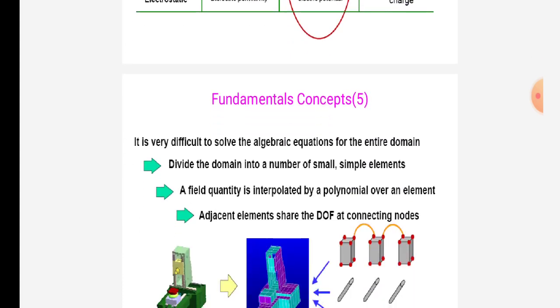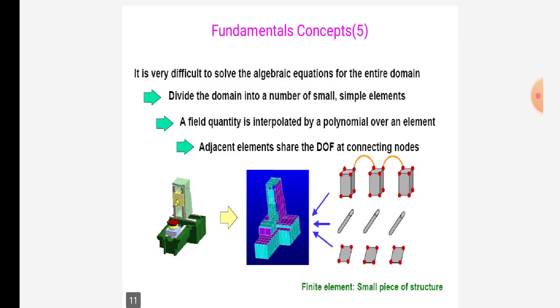It is very difficult to solve algebraic equations for the entire domain. So, divide the domain into a number of small, simple elements. It is also called as discretization. In there is a field quantity interpolated by polynomial over an element. In adjacent elements, share the degree of freedom at connecting nodes.